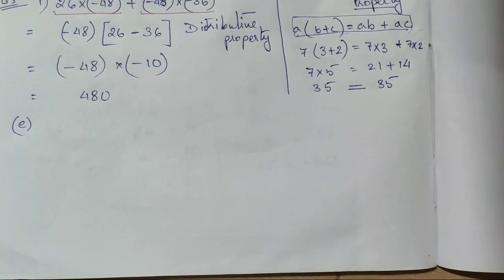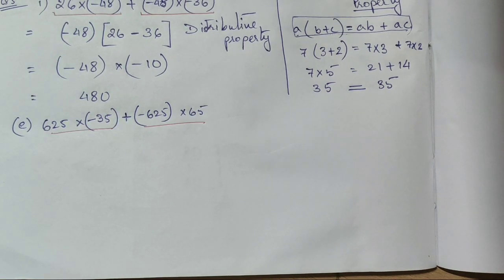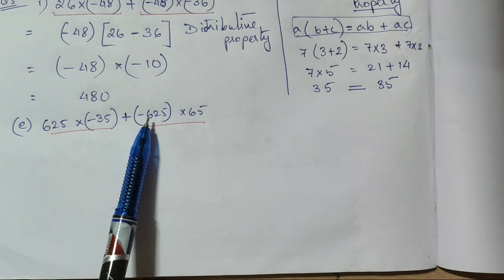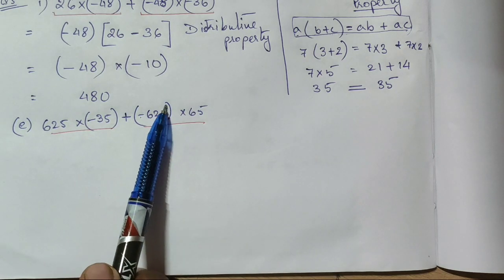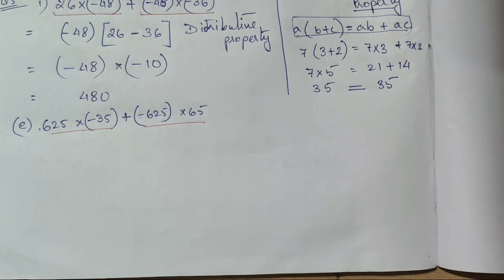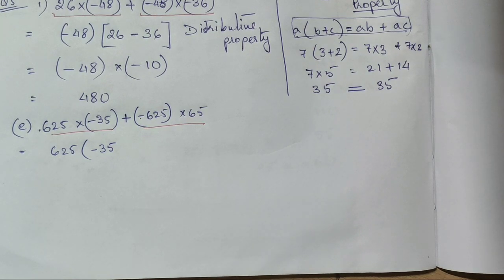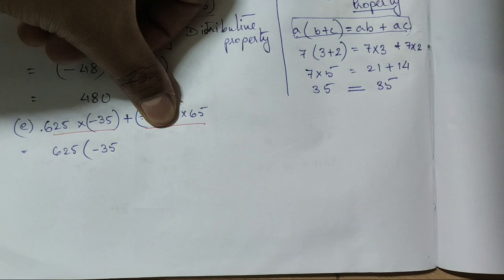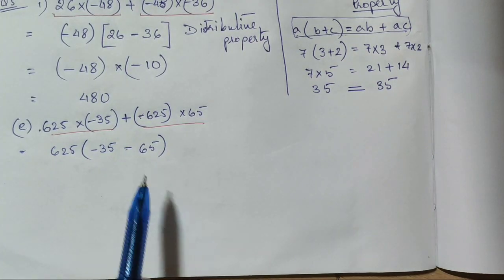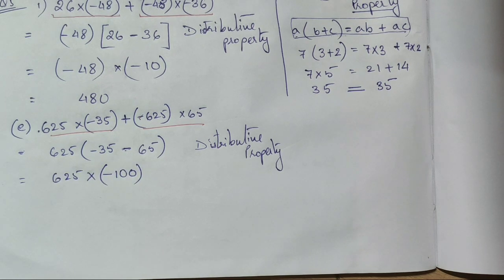In the next part there are again two terms, and 625 is common. Note this is -625, so if we take out 625 (not -625) as common, the minus sign remains separately. From the first term, removing 625 leaves -35, and from the second term, removing 625 leaves -65 with its minus sign. Applying the distributive property and then BODMAS gives us the answer.